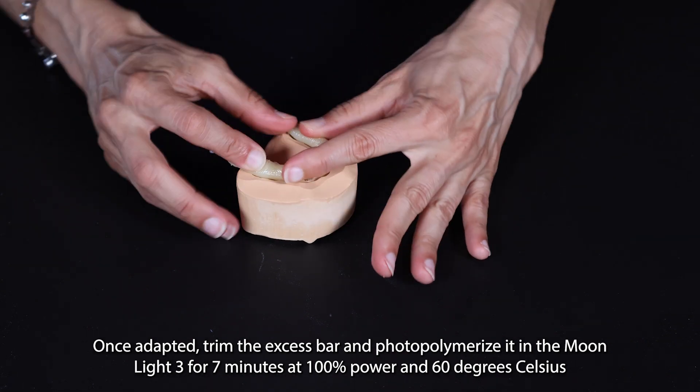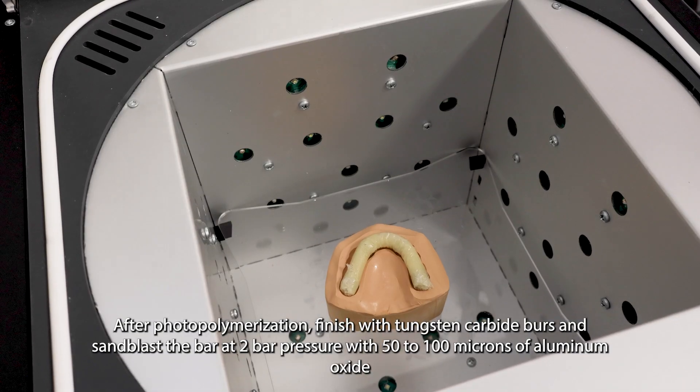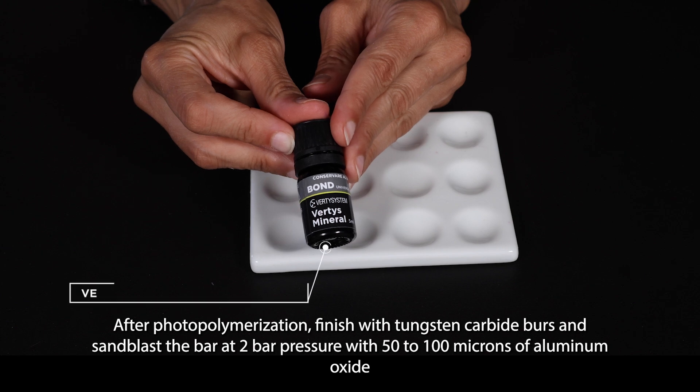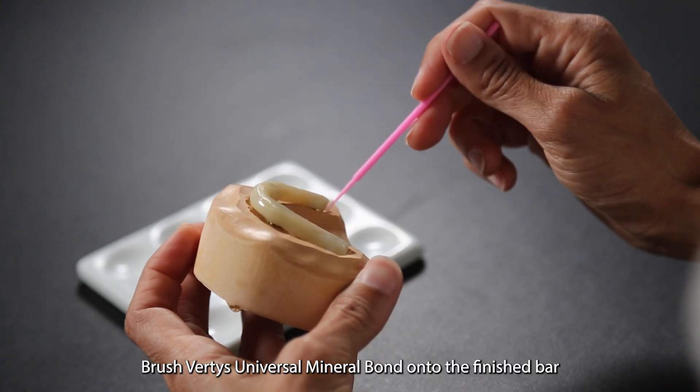After photopolymerization, finish with tungsten carbide burs and sandblast the bar at 2 bar pressure with 50 to 100 microns of aluminum oxide. Brush Vertis Universal Mineral Bond onto the finished bar.